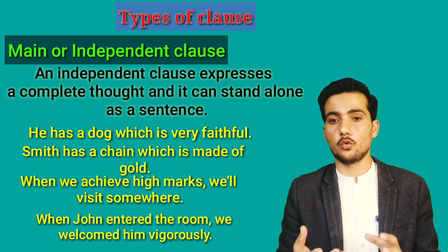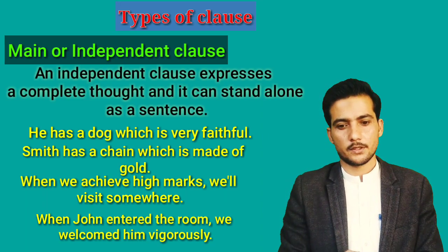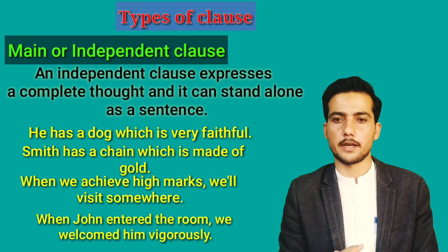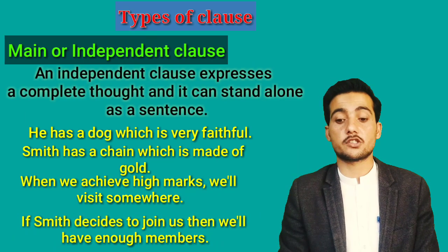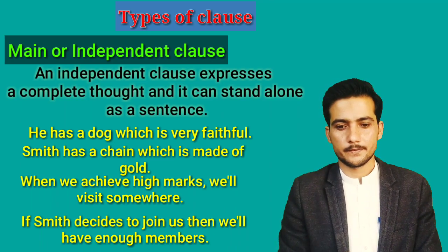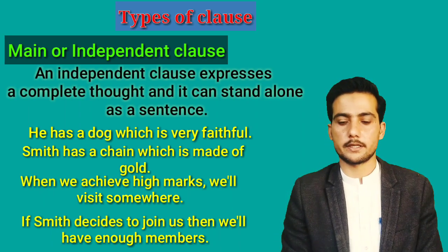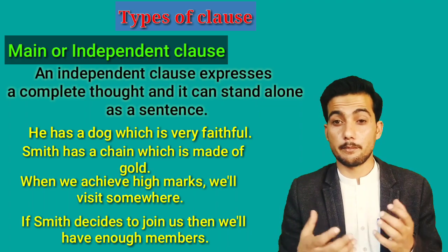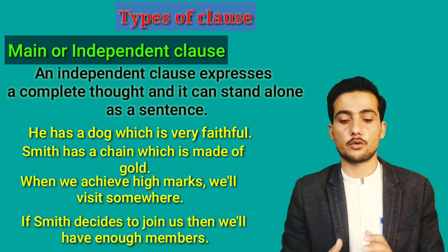'When John entered the room, we welcomed him vigorously' — 'when John entered the room' is the dependent clause. 'If Smith decides to join us, then we will have enough members' — 'if Smith decides to join us' is the dependent clause, and 'then we will have enough members' is the main or independent clause because it can stand alone as a sentence.